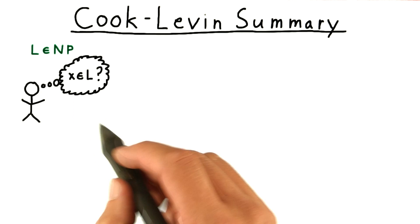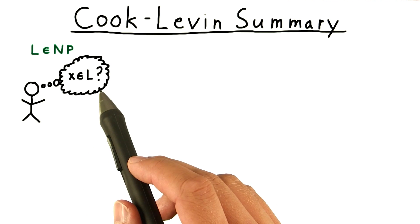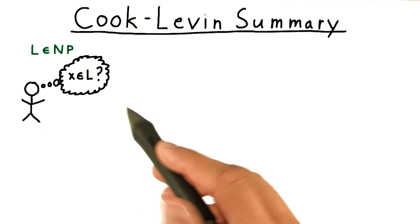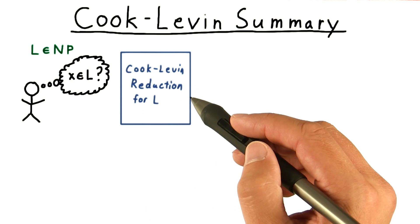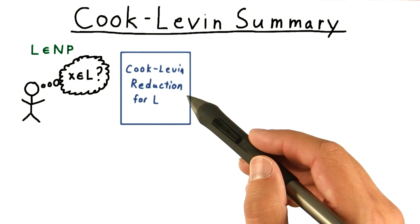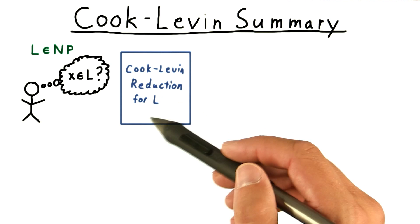Consider some language in NP, and suppose that someone wants to be able to determine whether strings are in this language. The Cook-Levin theorem argues that because L is in NP, there's a non-deterministic Turing machine that decides it.